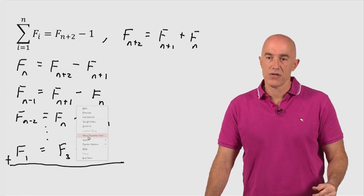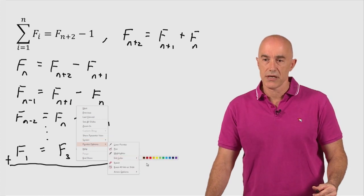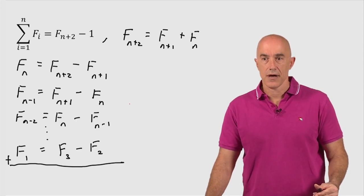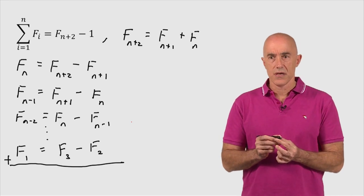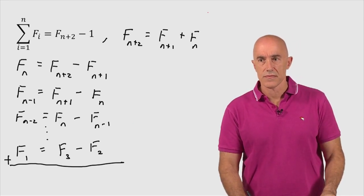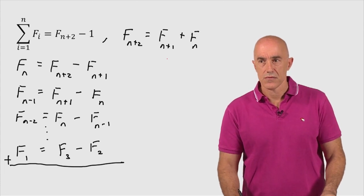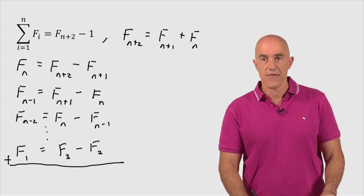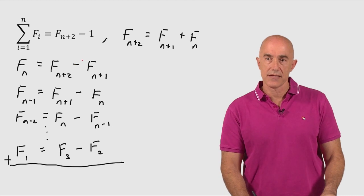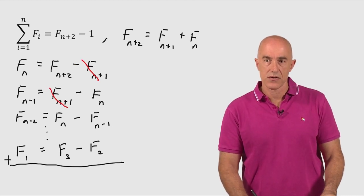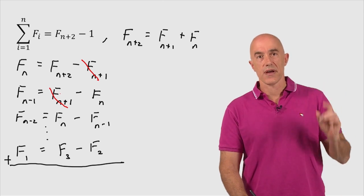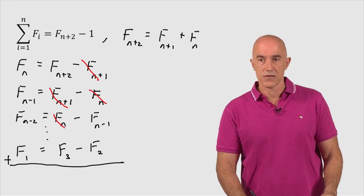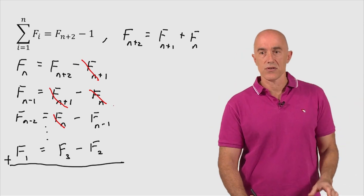But look what happens when we do that. Let me change the ink color to red for the moment. We're summing these equations, but look, we have Fn plus 2, where am I? We have Fn plus 2 minus Fn plus 1, and then we have Fn plus 1. So when we add, we get minus Fn plus 1 exactly cancels Fn plus 1, right? We have a really nice cancellation there. And it continues, minus F sub n cancels F sub n. And all these terms cancel, right?